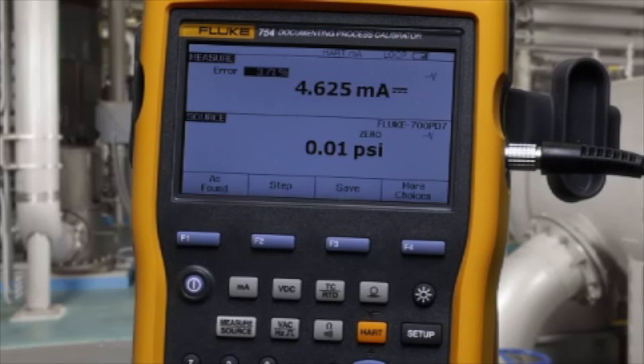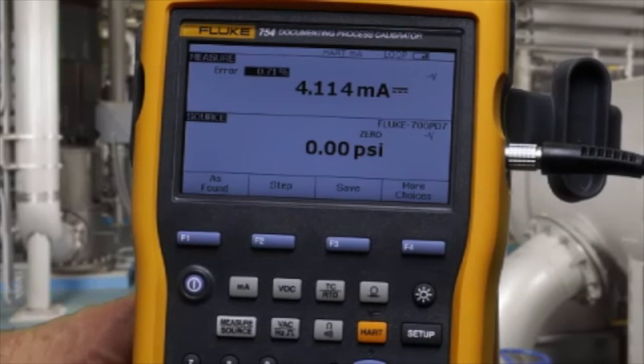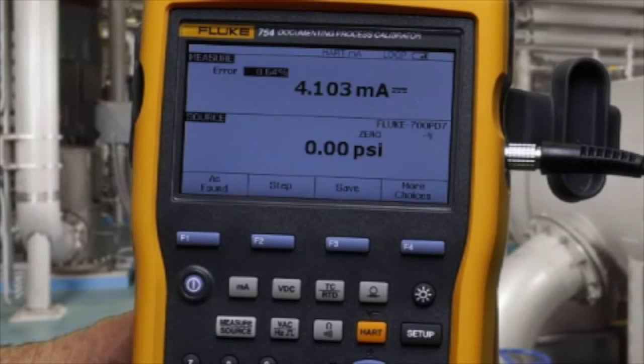Vent the pump to atmosphere. Make sure you have a good zero. Then select clear zero to zero the pressure module.